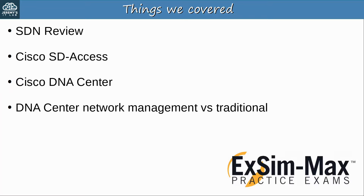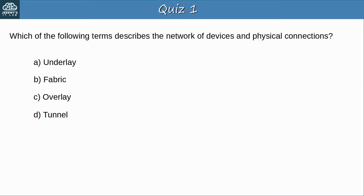Quiz question 1: Which of the following terms describes the network of devices and physical connections? The answer is A, underlay. The underlay refers to the underlying physical network, and then the virtual overlay network is built on top of it. The combination of underlay and overlay is called the fabric.